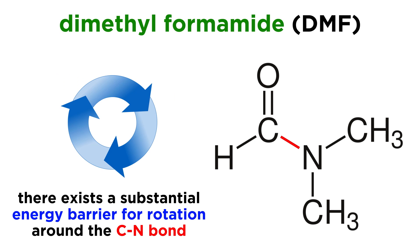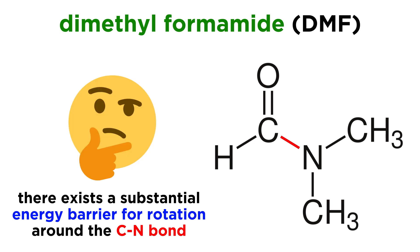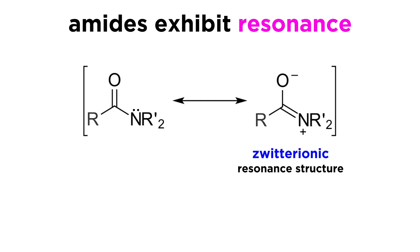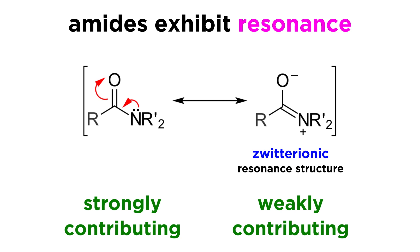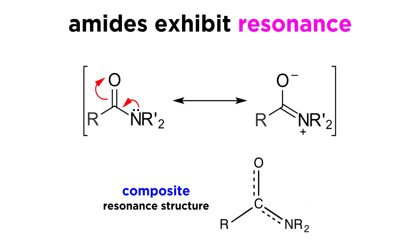One of the most interesting things about amides is the energy barrier for rotation around the C-N bond, which is substantial. We know that sigma bonds can rotate freely, so this may seem unexpected, but we must realize that amides have a zwitterionic resonance structure, whereby the lone pair on the nitrogen forms a pi bond to carbon, which kicks this pi bond up to form the oxyanion. This resonance structure is not as strongly contributing as the other due to the presence of formal charges, but it still contributes to the composite, which means there is partial pi bond character between carbon and nitrogen, and this is what limits the rotation around this bond.